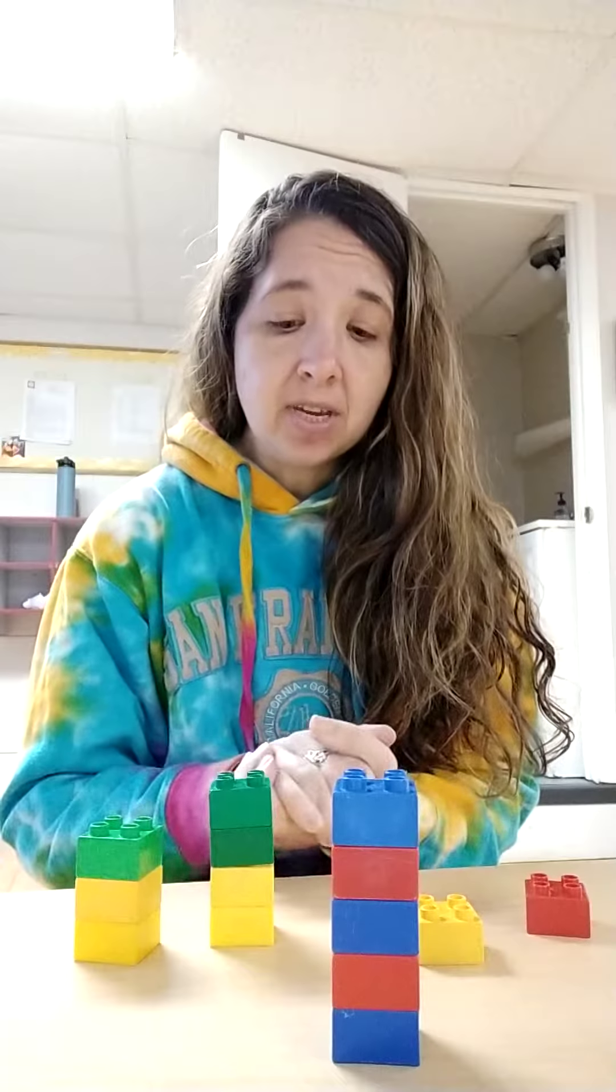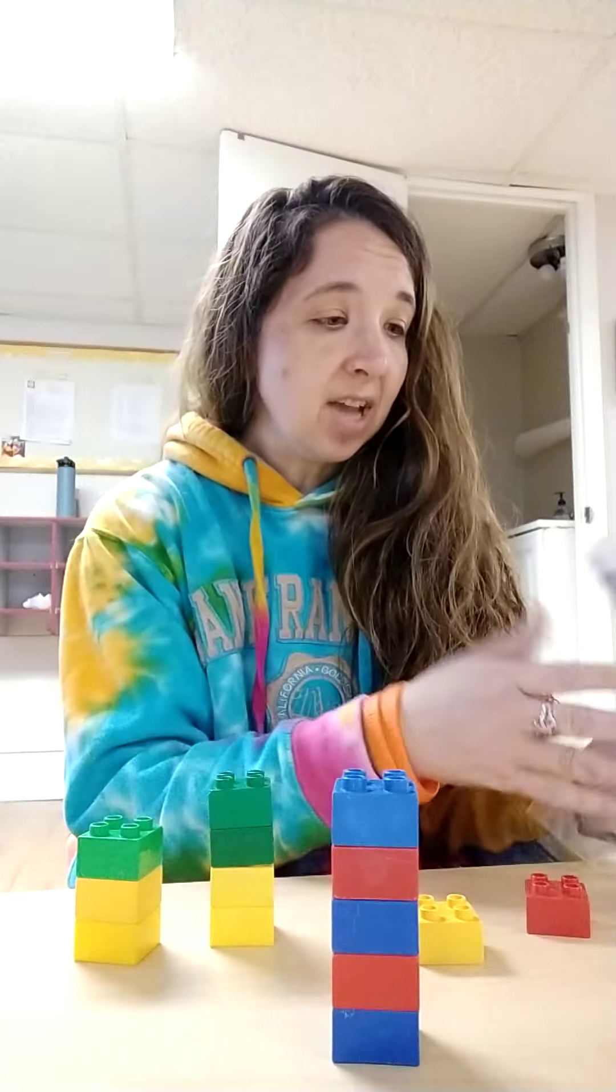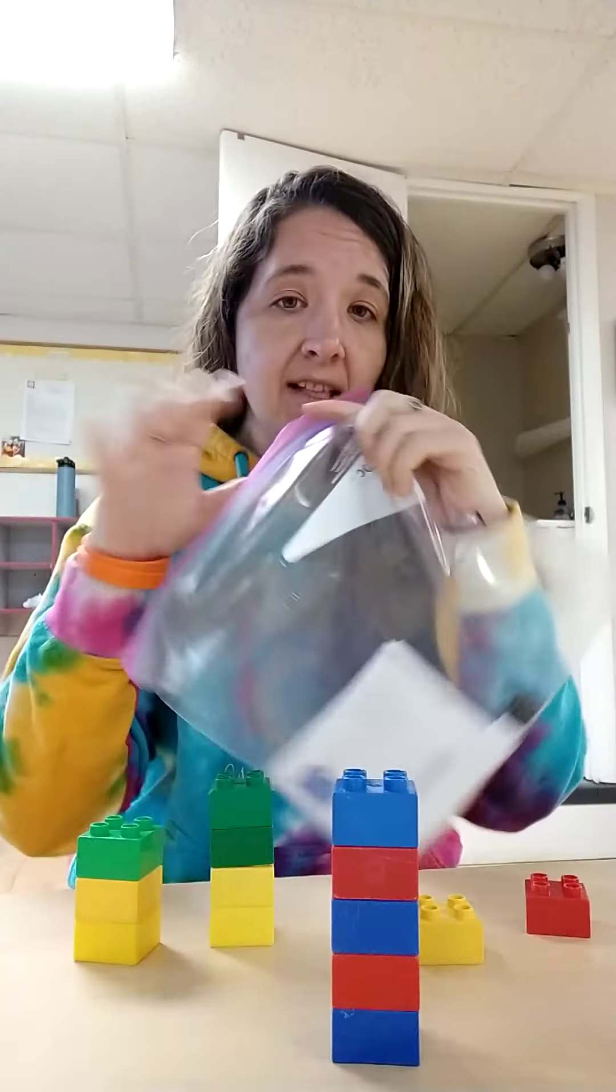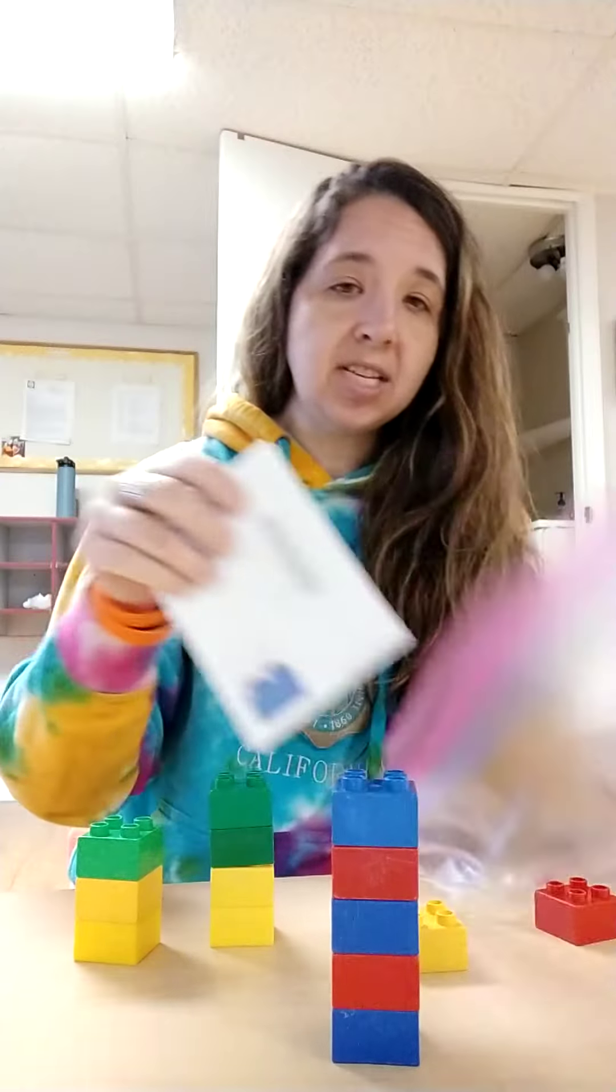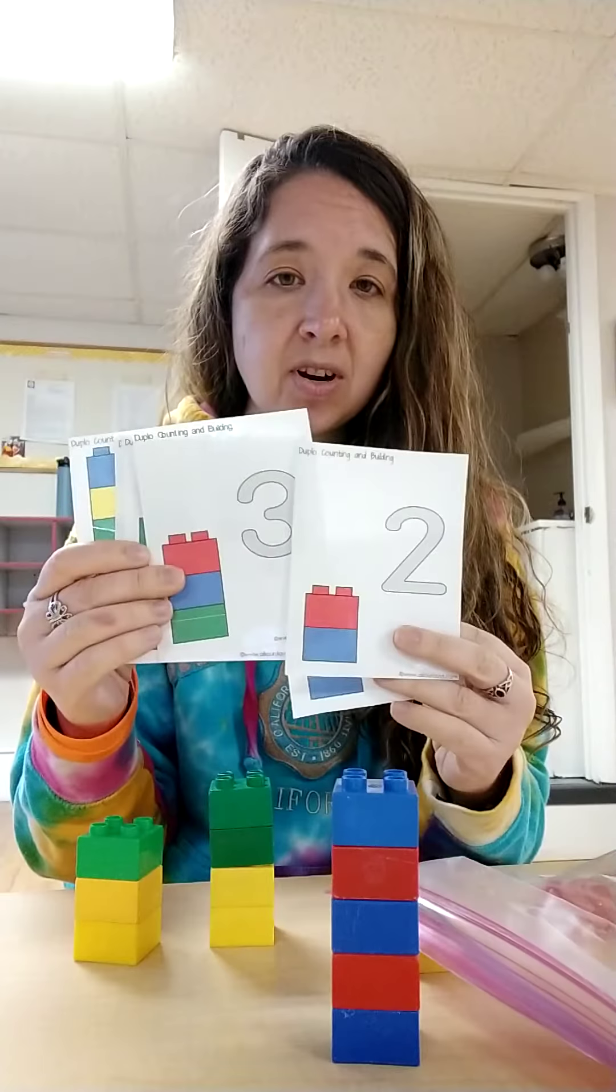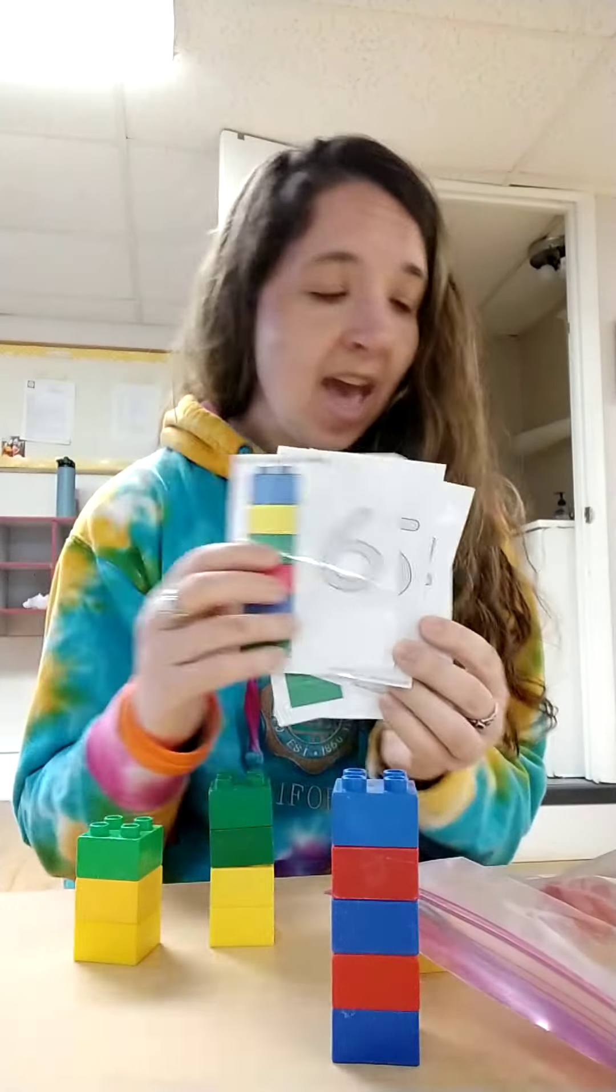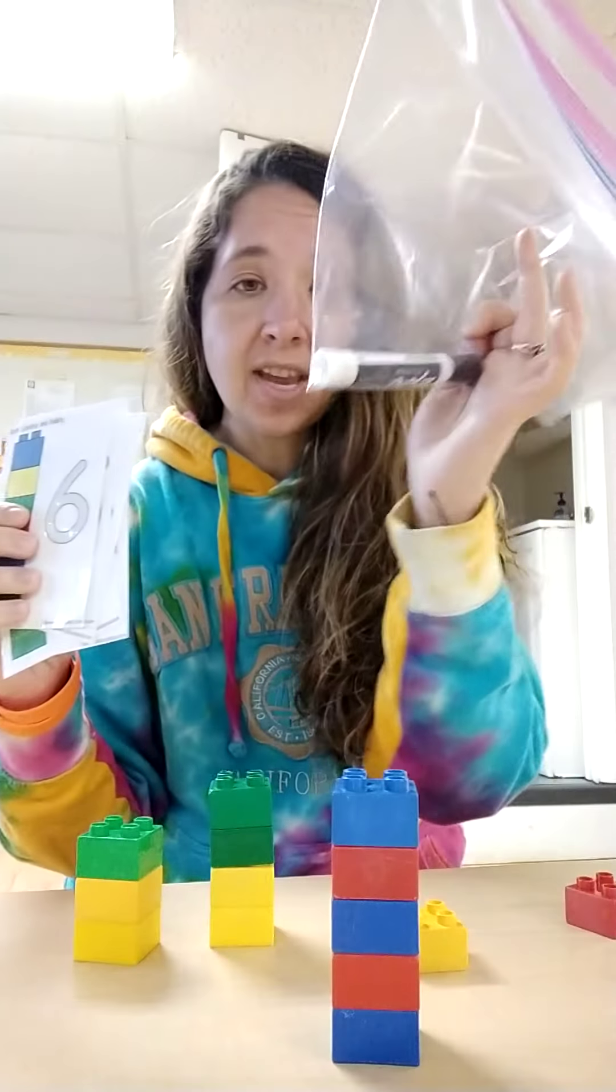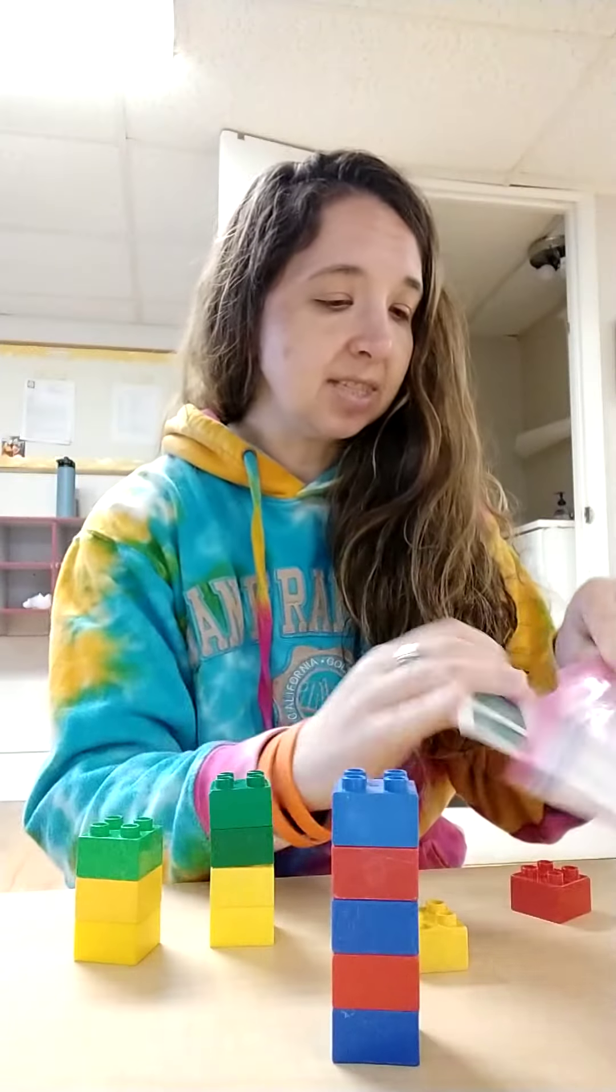And I happen to be including some of these in our learning-to-go bags. So if you're going to pick one of those up, you might have an activity like this in there where it has cards. These would be for some of our younger learners with the different numbers. They build a tower that many blocks high to match. And then we've also included a marker so they can try to trace over the number as they begin those pre-writing skills.